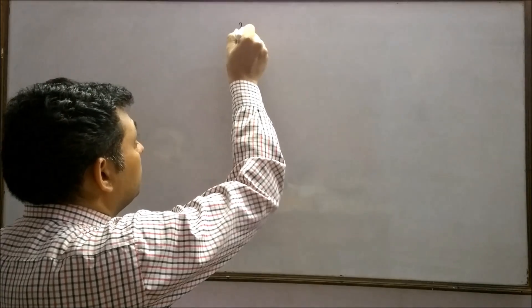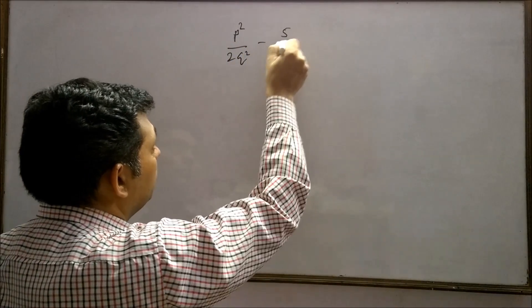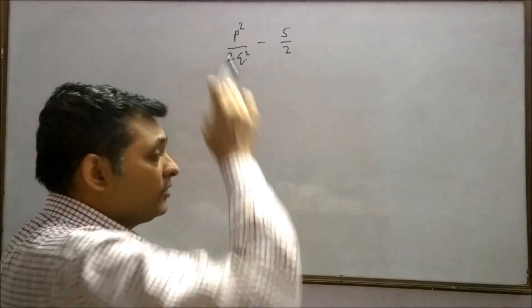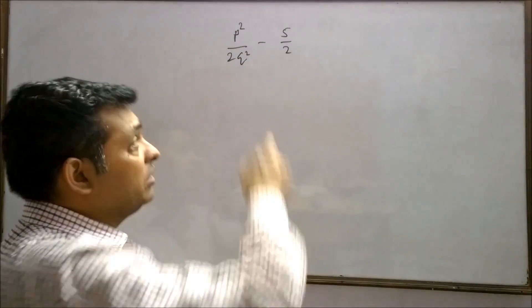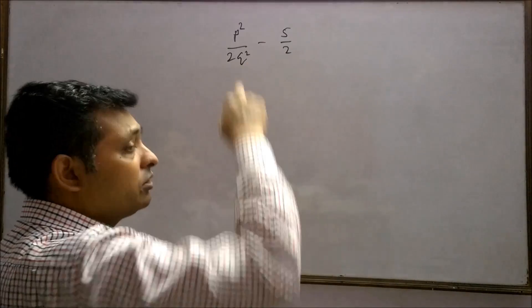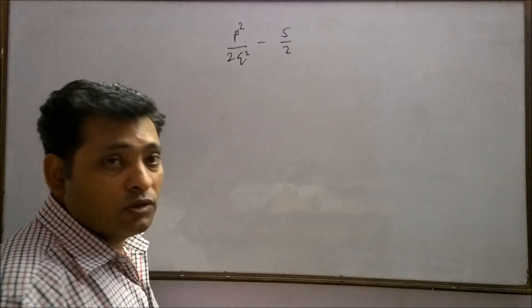Sometimes a genuine question arises in students' minds: how can we say p square upon q square minus 5 by 2 is rational? Here, p square is an integer, q square is also an integer.